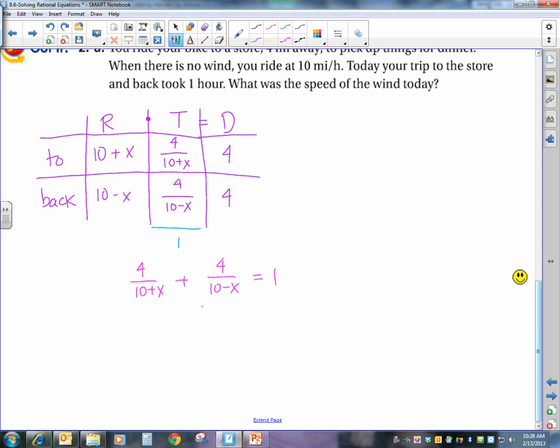Okay, we have a rational equation because I have rational expressions in there, and it's not a proportion. So I'm going to solve it by multiplying both sides by the LCD, which in this case is going to be 10 plus x times 10 minus x. I don't cross it out over here because then it makes it hard to know when you have to distribute. So I'm multiplying these expressions by everything in here.